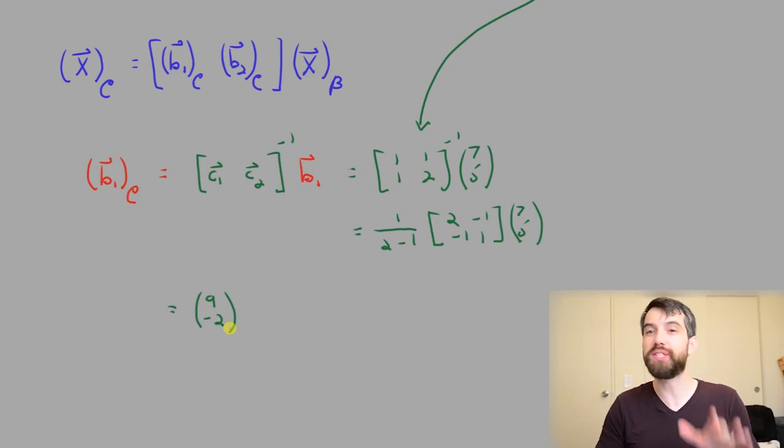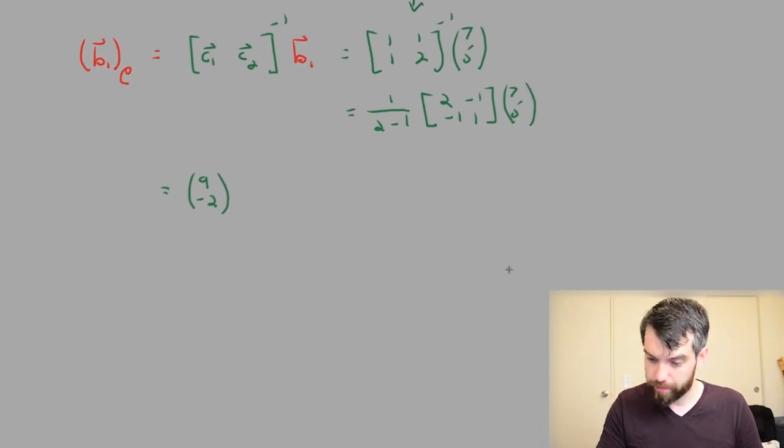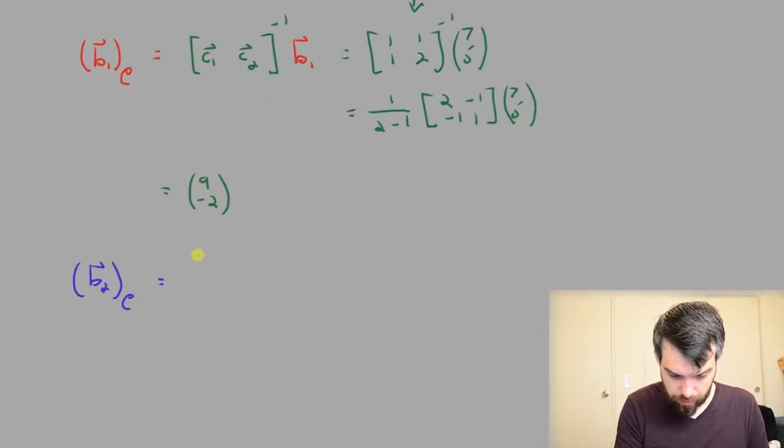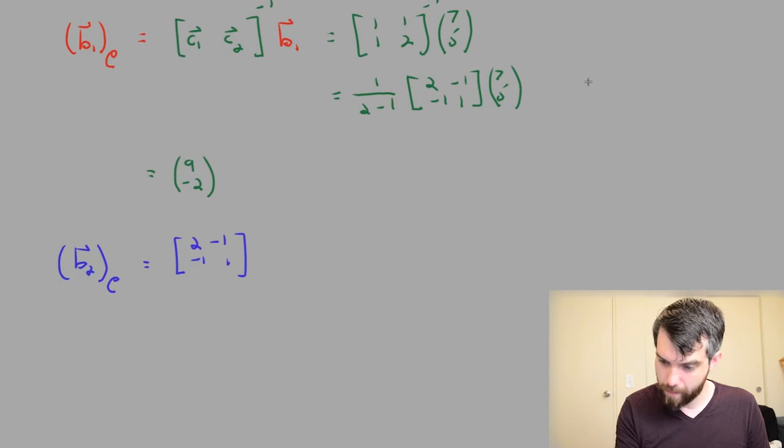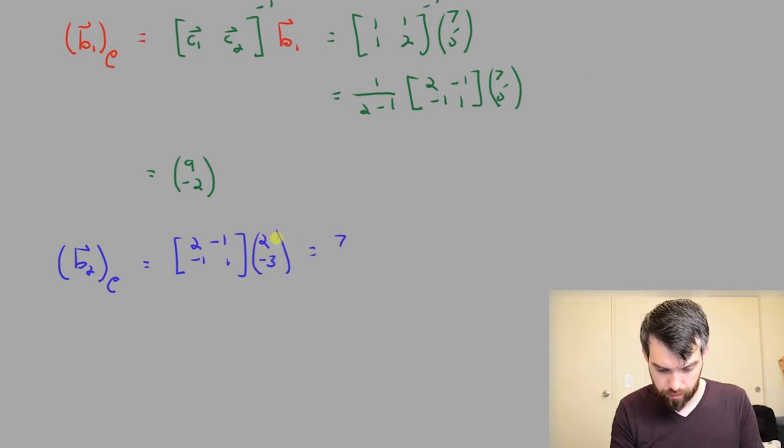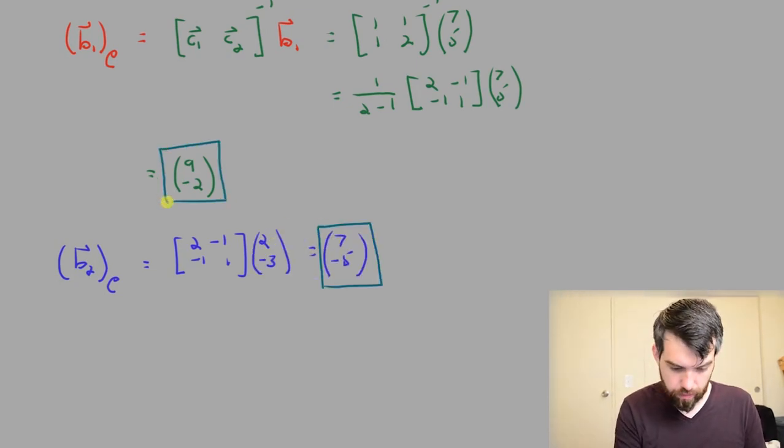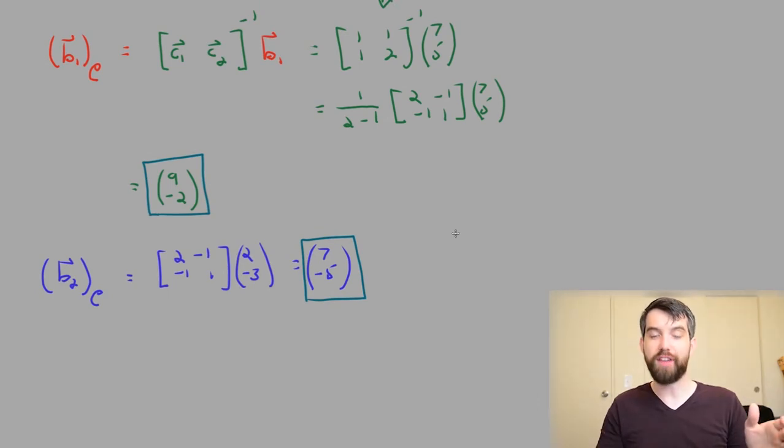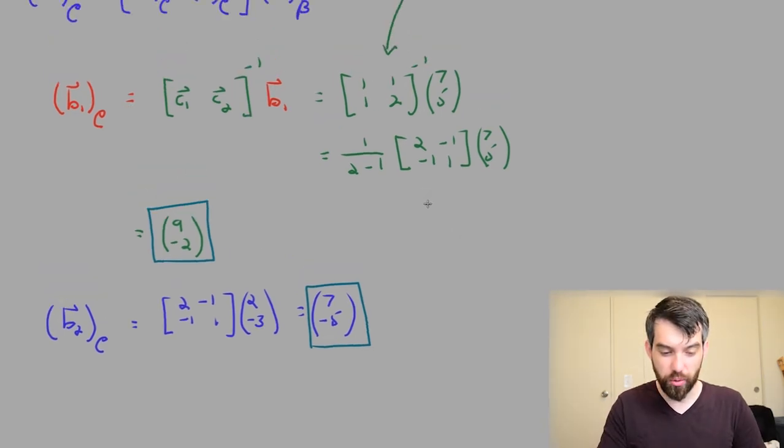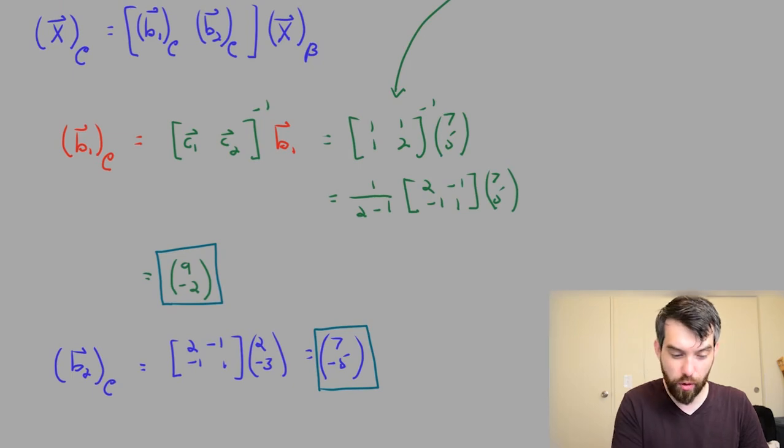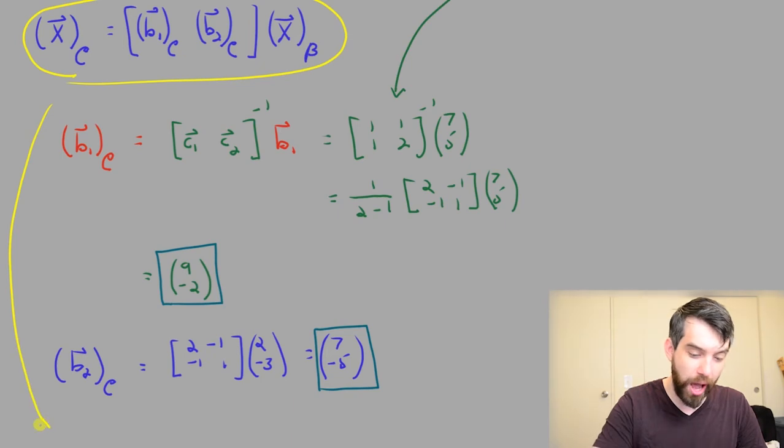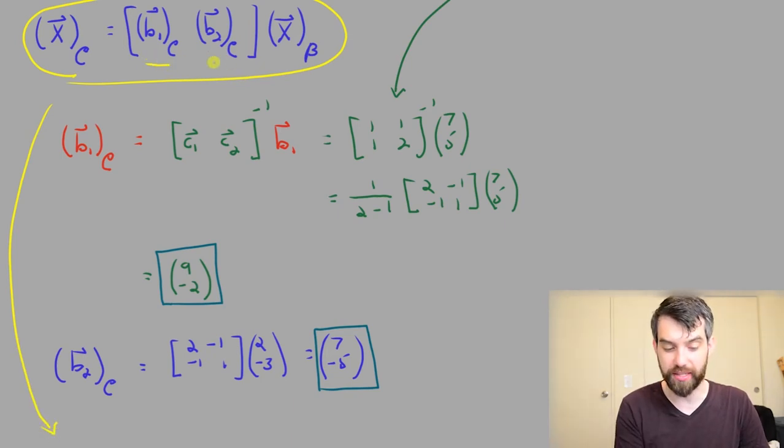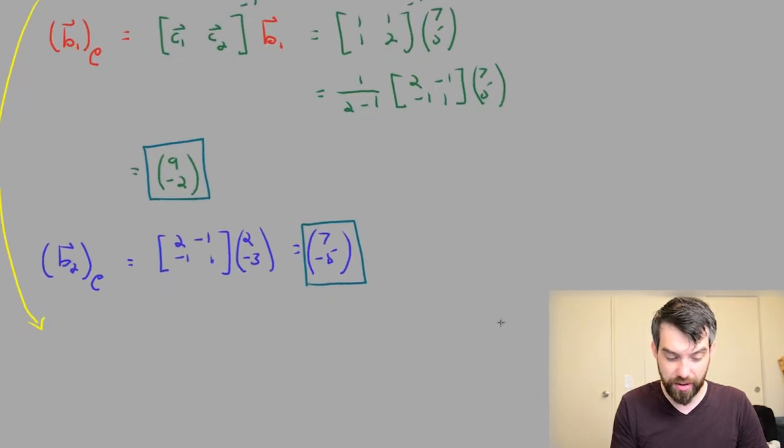I'm going to repeat quickly the same thing for B2. So I have my B1 and my B2 both written in that C basis. So let's figure out how we're supposed to use them. You'll recall that we had this formula here. This was going to be our change of basis formula. Now I know the B1 in the C basis and I know the B2 in the C basis. So let's come down here.